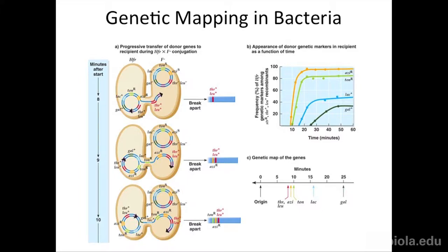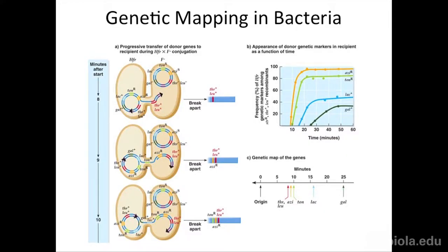We can use the integration of F-factor plasmids and HFR strains to map where genes are located on the bacterial chromosome. Here is an HFR strain whose F-factor has recombined into the genome. When this HFR strain infects an F-minus strain, you can set up basically the bacterial equivalent of a test cross. This F-minus strain has no F-factor, so it will be the recipient of conjugation when in the presence of an HFR or F-plus strain.